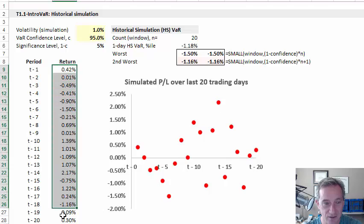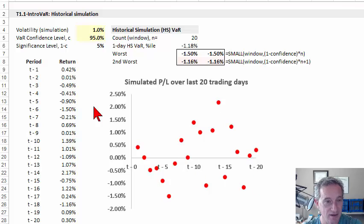So to do that, I have simulated daily returns over the last 20 days, T minus one going to T minus 20. That could be the last calendar month, and the last calendar month of 30 calendar days might have 20 daily returns. That would be in practice a very short window to use, but I'm just illustrating the example.